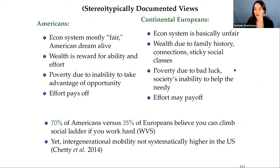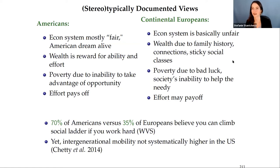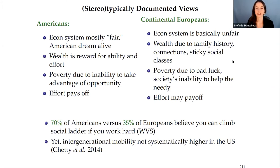Let's dig into the first project on intergenerational mobility and preferences for redistribution. This was done right after the 2016 US election, when there was a lot of debate about the possibly crumbling American dream. We started from the stereotypically documented gap in views between Americans and continental Europeans: Americans typically think the economic system is mostly fair, the American dream is alive, and wealth is the reward for ability and effort. Stereotypically, Europeans think the opposite — the system is unfair and wealth is tied to family history or connections.